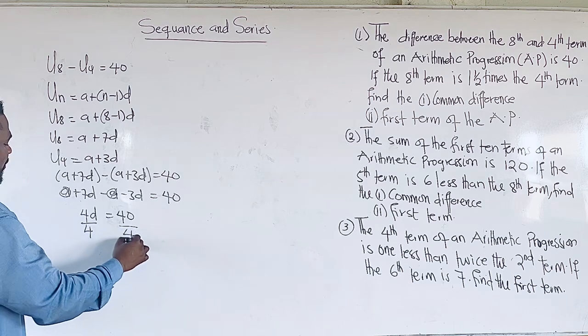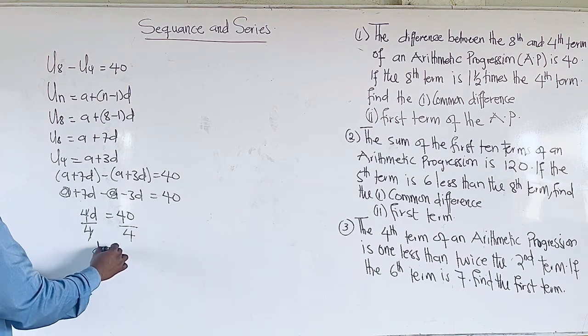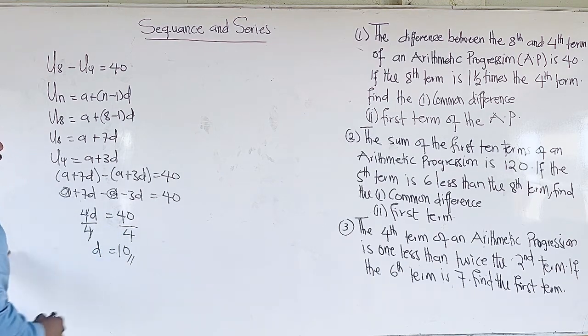7D minus 3D will give us 4D = 40. Divide by 4, and our D, which is the common difference, is going to be 10.